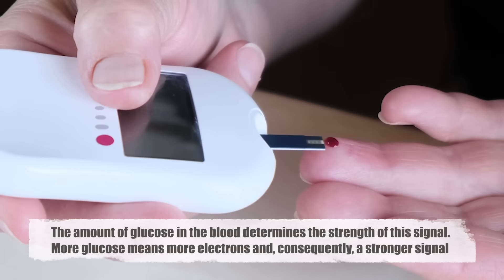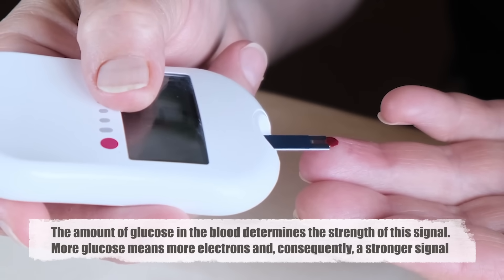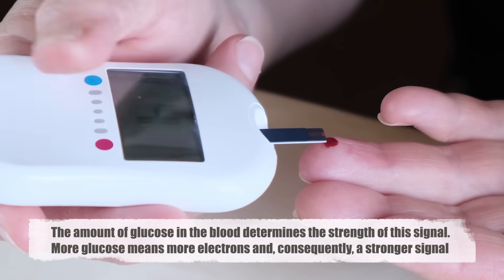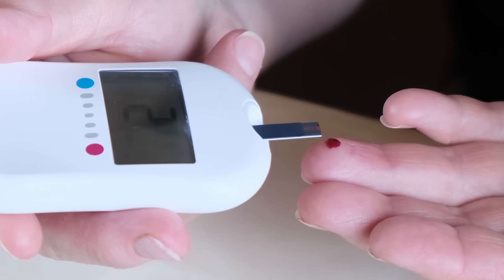The amount of glucose in the blood determines the strength of this signal. More glucose means more electrons and, consequently, a stronger signal. This signal then travels into the meter, ready to be interpreted.